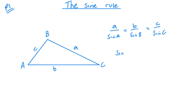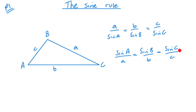We can also have it the other way around, with sine A over a, sine B over b, and sine C over c. If I'm trying to find a missing side, I will use the first form. If I'm trying to find a missing angle, I'd use the second set. And just to be clear, I'd only use two of these at a time — say, B and C, or A and B, or A and C.